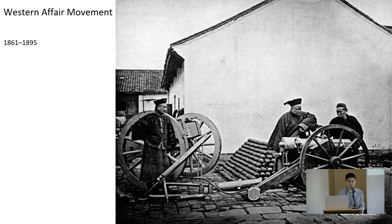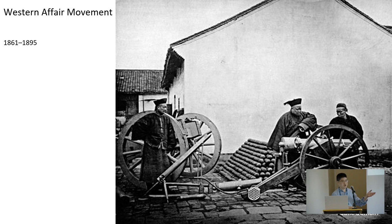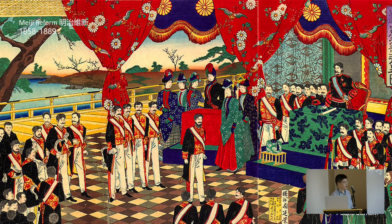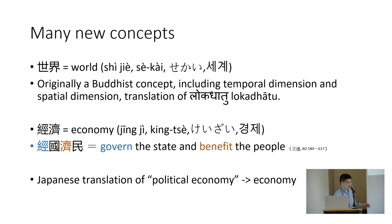People started thinking they had to learn Western knowledge or risk being defeated. In China there was the so-called Western Affairs Movement, though as Taiwanese or Chinese we know it failed compared to Japan's Meiji Reform. The Meiji Emperor announced a new constitution, and Japanese people adopted not only Western weapons but also new concepts — like biology, physics, and science — which entered the Japanese vocabulary.